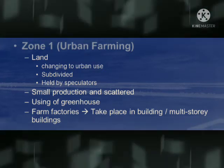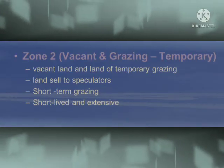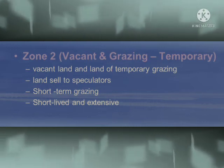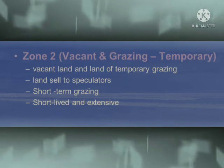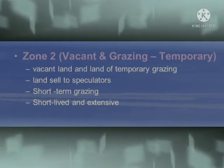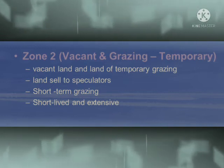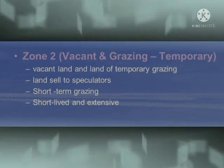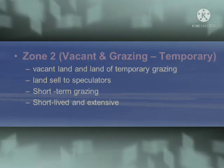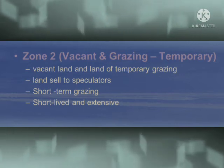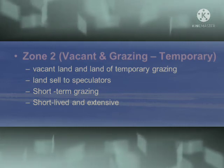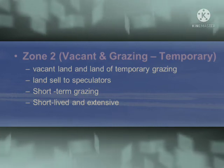Zone two is vacant land and temporary grazing. This land is mainly used for temporary grazing and is held by speculators. Farmers leave much of the land empty to sell to urban landowners at the most opportune moment, allowing grazing only under short-term leases.